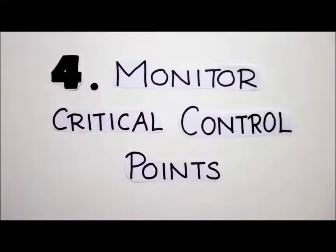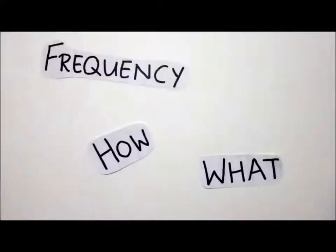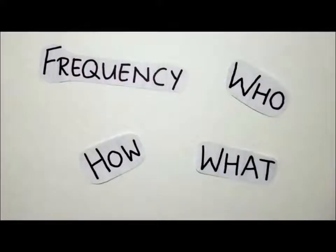The fourth principle is the establishment of monitoring procedures. After establishing the critical limit, we have to come up with procedures to monitor the process to ensure that the critical control point is still under control. Monitoring procedures include visual observations, temperature measurements and time assessments. In coming up with monitoring procedures, it is important to consider four things: what is being monitored, how monitoring is being done, the frequency of monitoring, and who is doing the monitoring.